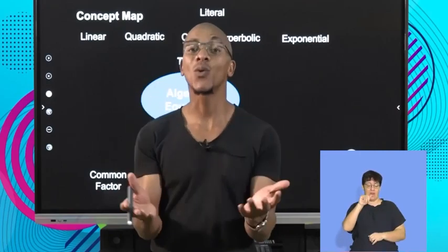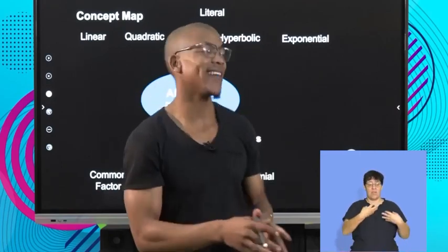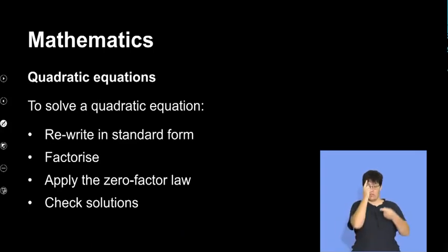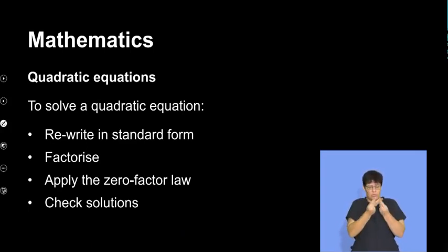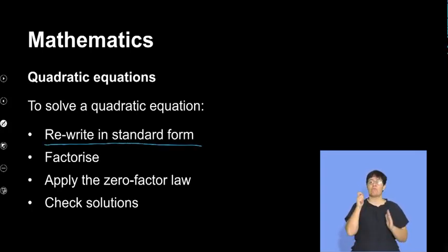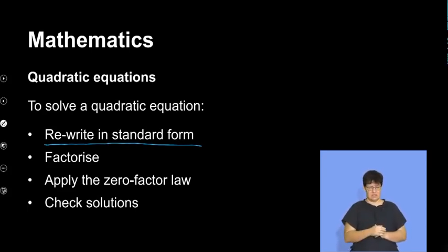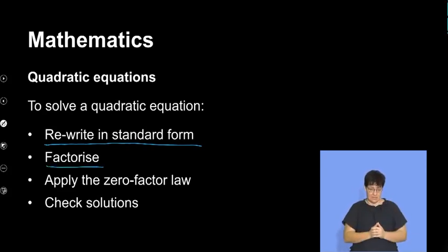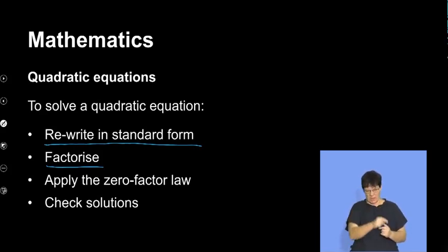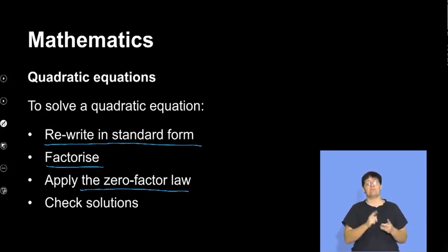So let's have a look at it. Firstly, to solve a quadratic equation, you always need to make sure that you first rewrite it in standard form — that's your very first go-to place. You do not do anything unless it is in standard form. Number two, you then factorize. You know the types of factorizing — it's not only about two brackets, it can also be a common factor. And from there you apply the zero factor law, which I'm going to show you just now.